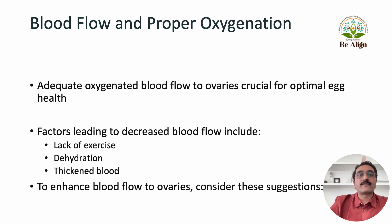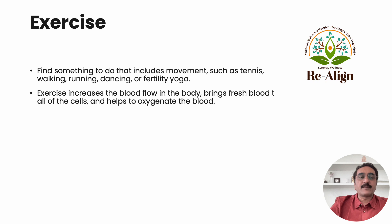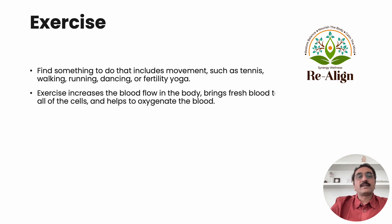Adequate blood flow to the ovaries is very crucial for optimal egg health. Lack of exercise, dehydration, and thickening of the blood are factors that can impact blood flow and prevent the eggs from getting oxygenated blood. Exercise is very important because it not only enhances the body's movements, it also releases certain hormones — it is a very important aspect of having a good fertile cycle.